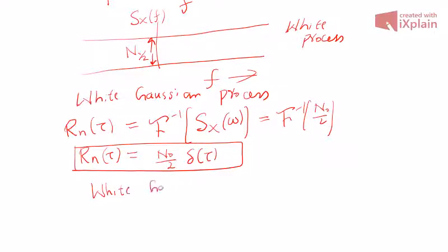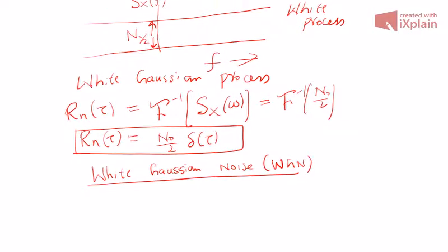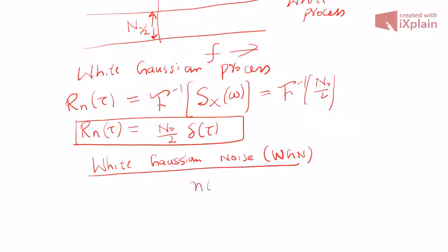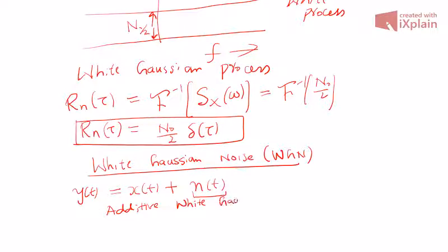If this process is modeling noise in a communication system, we call it white Gaussian noise (WGN). Suppose you have a signal x(t) — it could be a DSB-SC signal or FM — you transmit it, and at the receiver this white Gaussian noise gets added, and you receive y(t). We then call this channel an Additive White Gaussian Noise (AWGN) channel.